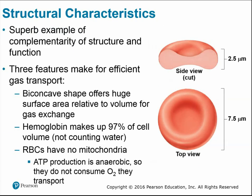Structure reflects function — three structural features make red blood cells very efficient for gas transport. First, the biconcave shape increases surface area relative to volume, allowing more oxygen to be packed in. Second, hemoglobin makes up 97% of the cell volume. Third, red blood cells have no mitochondria; instead of using aerobic ATP production that requires oxygen, they use anaerobic ATP production so that 100% of the oxygen they transport makes it to the tissue cells.